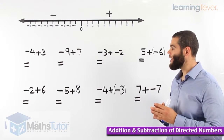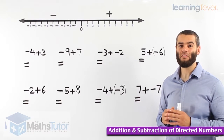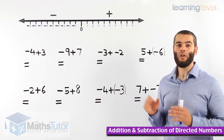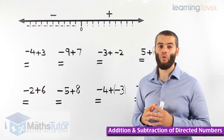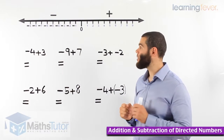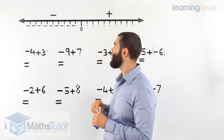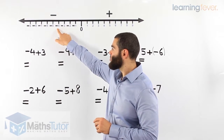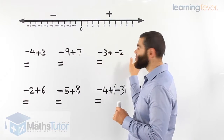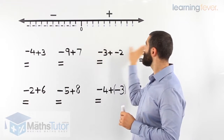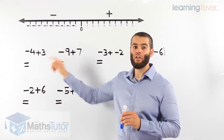Here we have questions involving negative or directed numbers. We'll go through them one by one — it's a very easy process using the number line. A quick rule to remember: when we're adding, we're moving towards the right. When we're minusing or taking away, we're going towards the left. Remember that rule — very important.